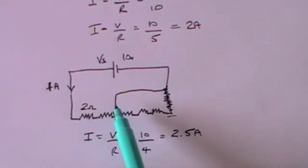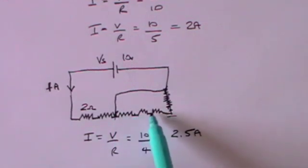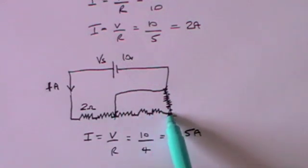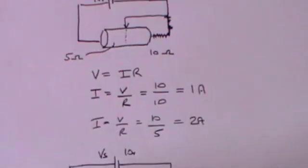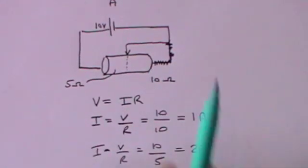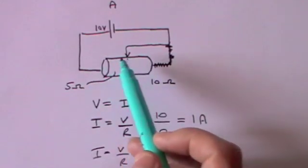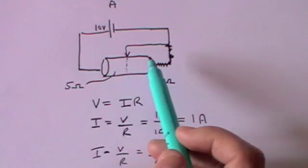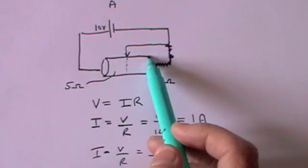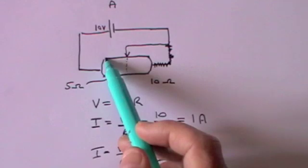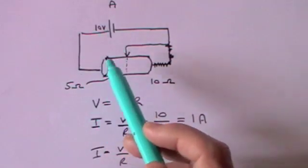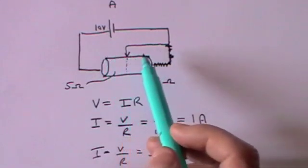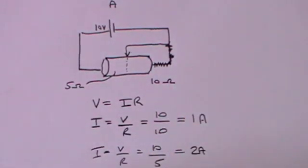In the discrete resistor arrangement you can only connect the wire at fixed points, giving effective resistances of 2, 4, 6, 8, or 10 ohms. But with the continuous conducting material arrangement, you can slide the wire along continuously and have any resistance from 0 ohms — a short circuit at the very end — all the way up to 10 ohms. That is called a rheostat.